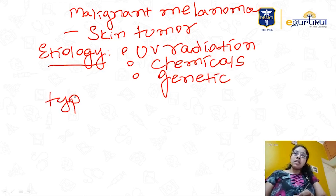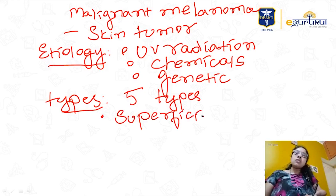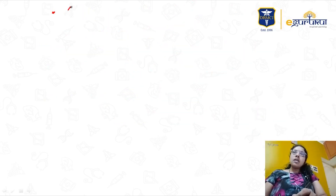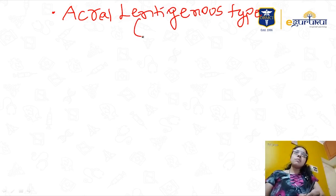The types of malignant melanoma are very important — basically there are five types. The most common type is the superficial spreading type. The second type is acral lentiginous, which is most common in the extremities and is the most common type seen in Indians — you should remember this.